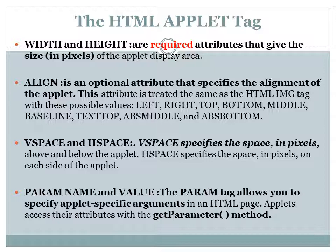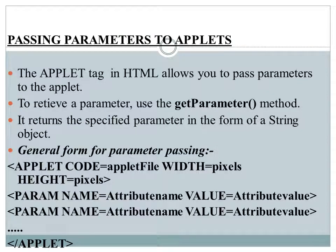The param tag is similar to command-line arguments — we can pass arguments to an applet program from the browser and retrieve them using getParameter. The general form is: specify the applet tag with code, width, and height, then specify any number of param tags. Inside each param tag we specify the name and value of that parameter. To retrieve a parameter in code, use the getParameter method.